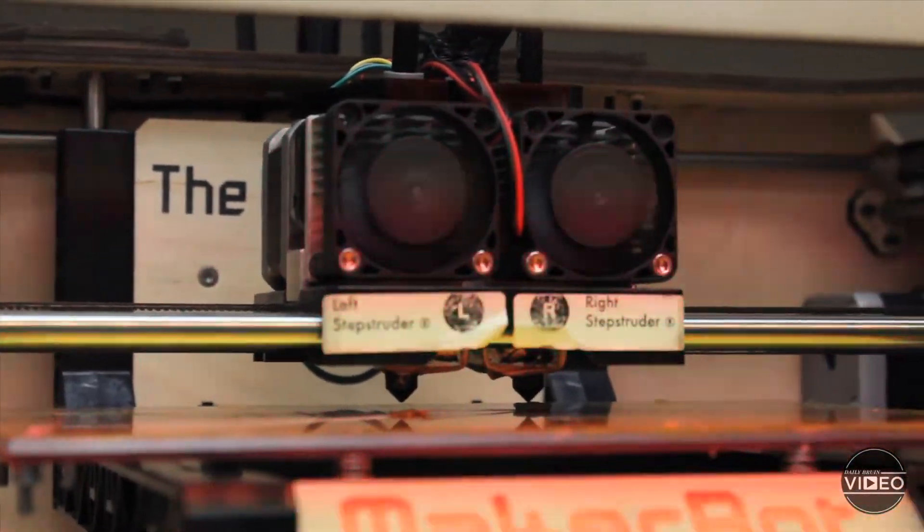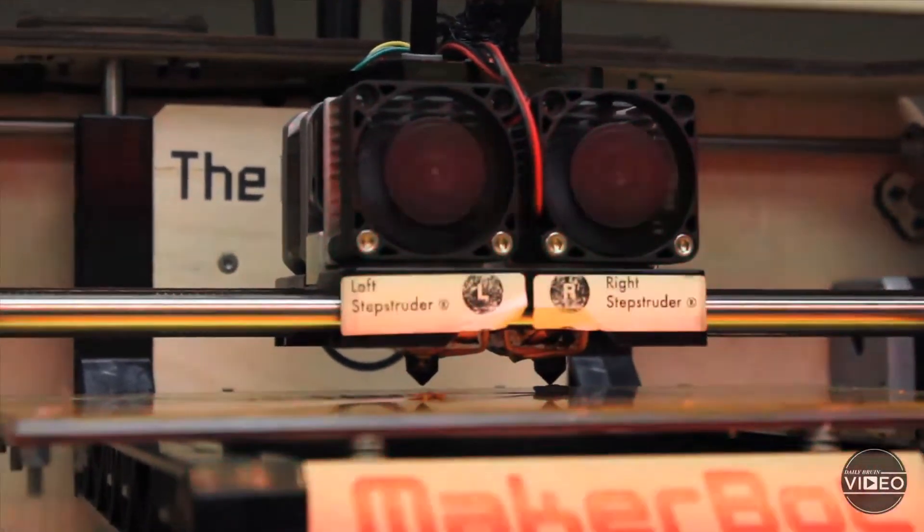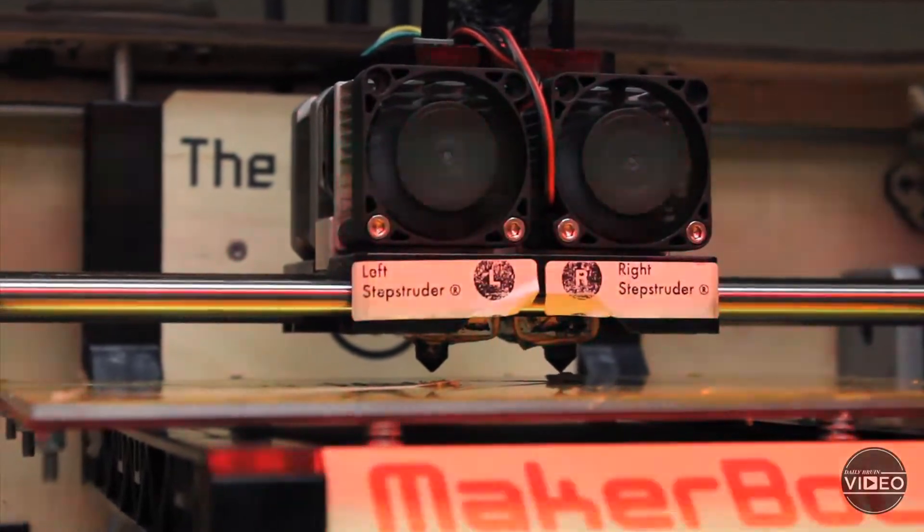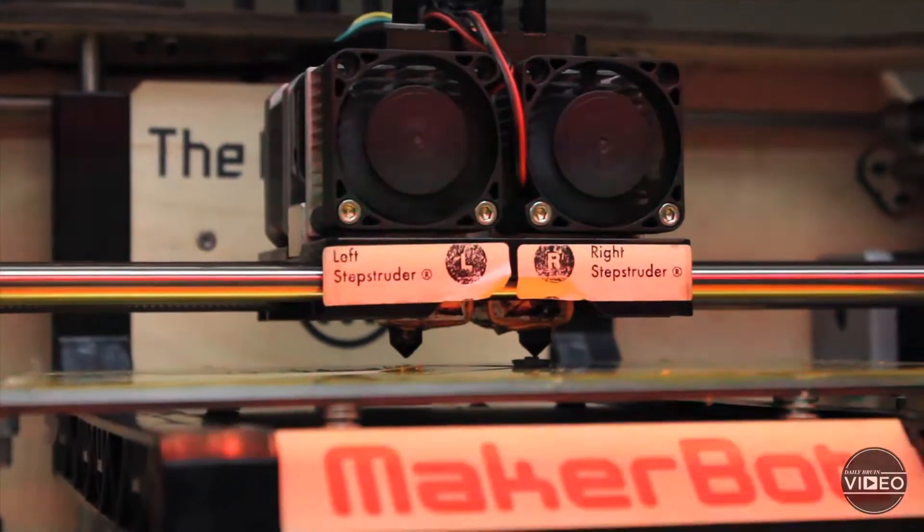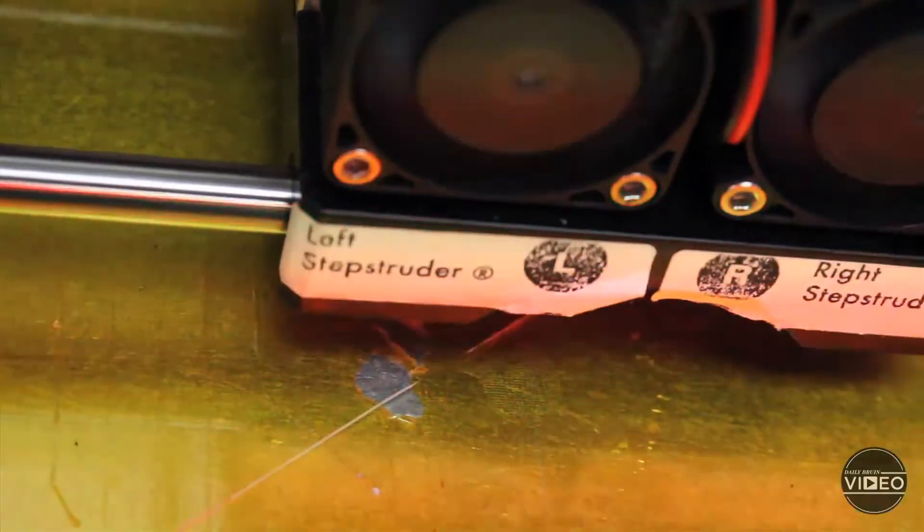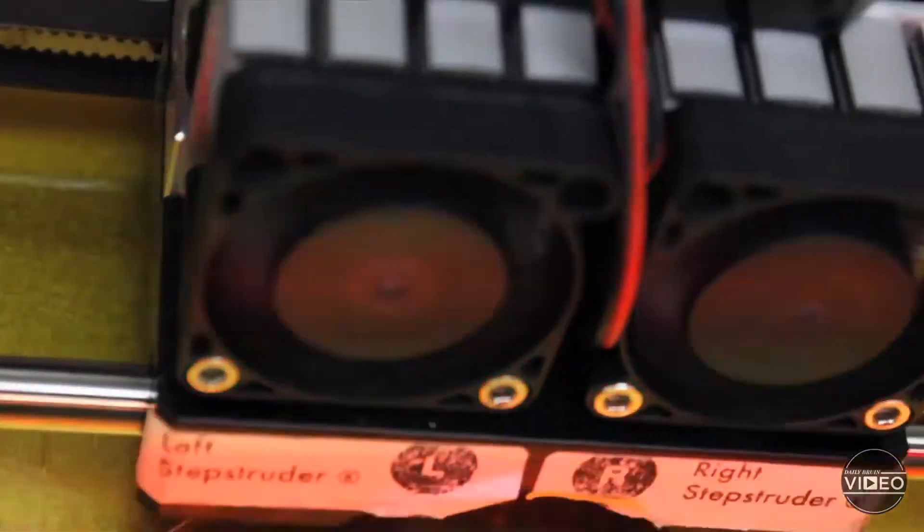And as the build goes higher and higher, the build plate will automatically lower, so the extruder can then place the next layer of plastic on top of the previous one, ultimately resulting in the print that has a shape that you designed and want as your final product.